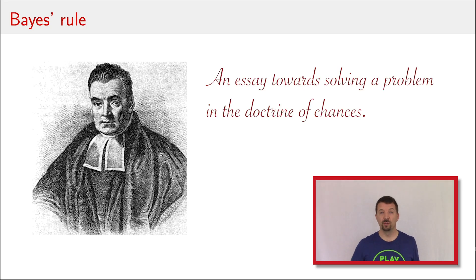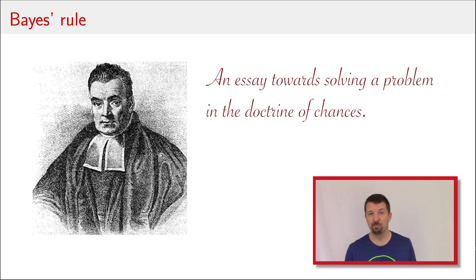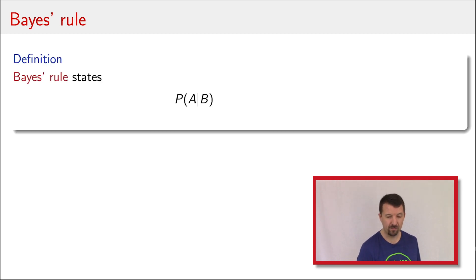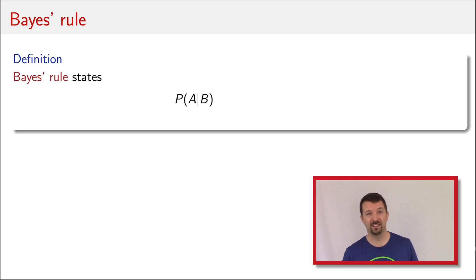Now, Bayes' Rule itself — the name Bayes — comes from a statistician, philosopher, and minister named Thomas Bayes, who lived in the early 1700s and who came up with this formulation. Bayes' Rule itself is just really an application of conditional probability twice.